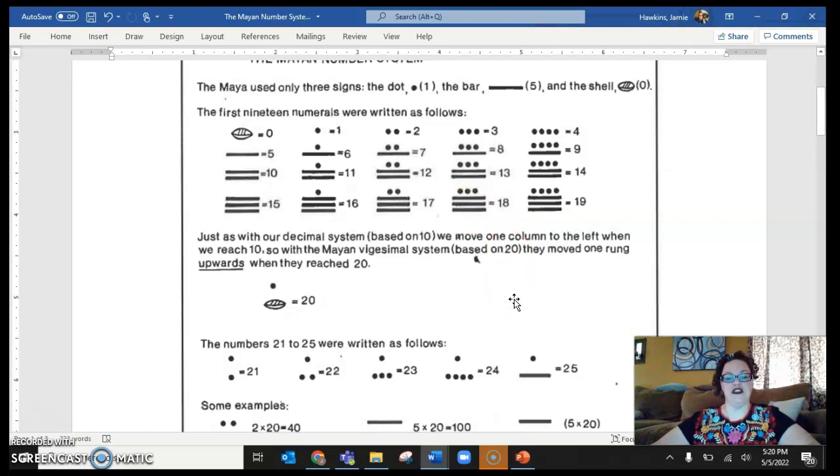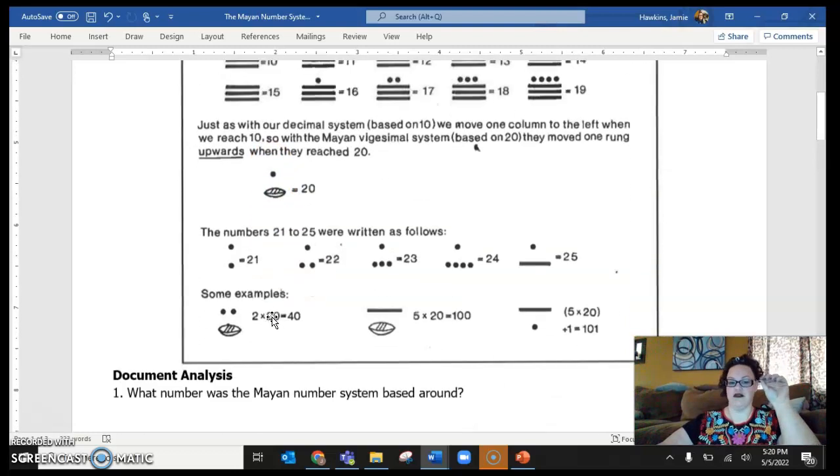But just as with our decimal system based on 10, we move one column to the left when we reach 10. So the Maya system based on 20, they moved one rung upwards when they reached 20. So this is how they wrote 20. They didn't do five bars on top of each other because that would be 5, 10, 15, 20. What they did was they did zero, but two levels of it. So there's 1, 0. That shows that there's 20. It's a little bit confusing. Let's look at some other options.